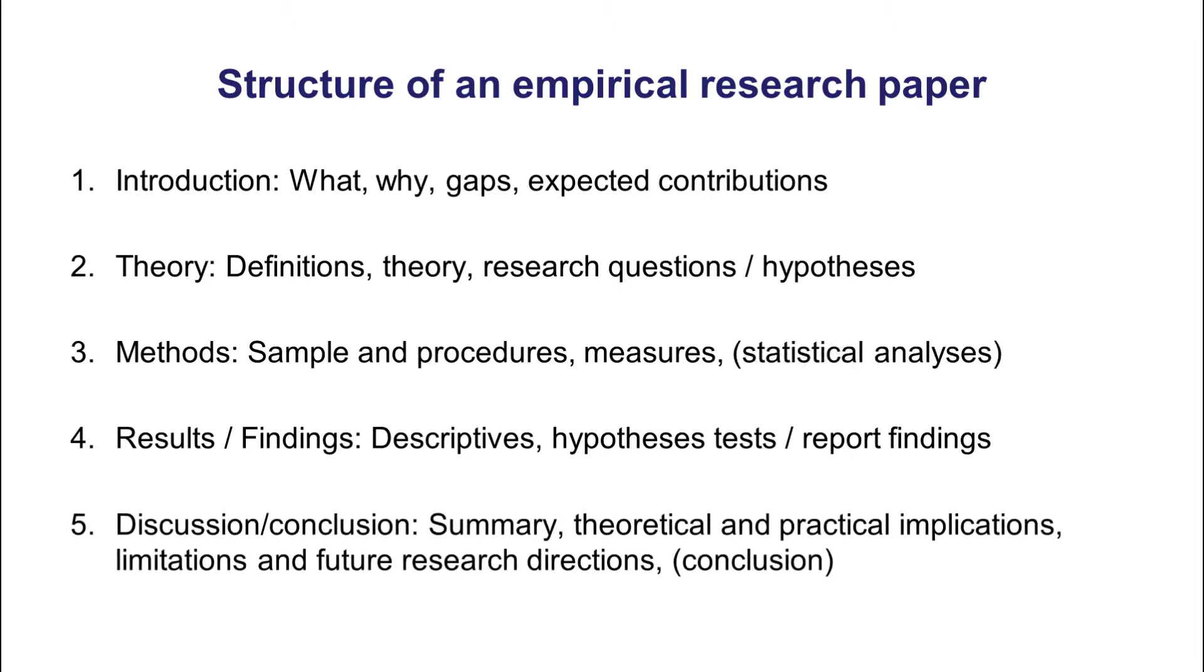In the fifth section, you will then discuss your findings. And no surprise, we call this section very often discussion or also conclusion. There are different types of papers. Sometimes it's integrated, sometimes you have a separate, very short conclusion section at the very end. The typical components of a discussion section would be a summary of your main findings, and then you would also explain your theoretical and practical implications, and then mention limitations and directions for future research. These five sections make up the typical structure of an empirical research paper.